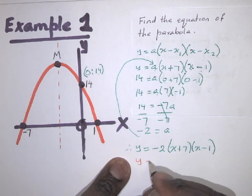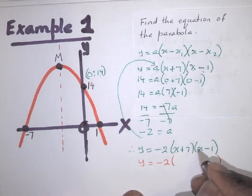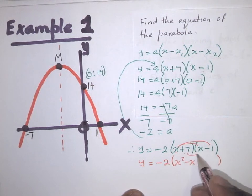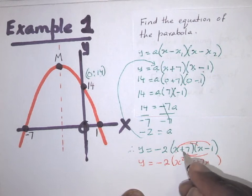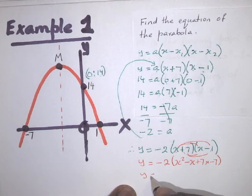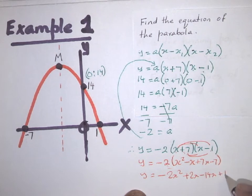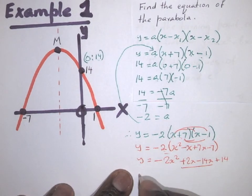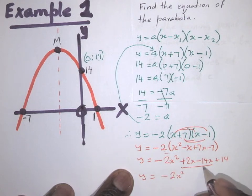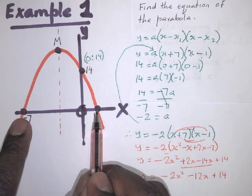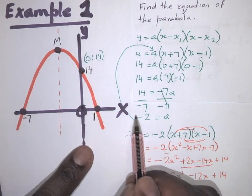If they ask you to remove brackets: y = −2 × (x + 7)(x − 1). Expanding (x + 7)(x − 1): x × x = x², x × (−1) = −x, 7 × x = 7x, 7 × (−1) = −7. So inside we get x² + 6x − 7. Multiplying by −2 gives y = −2x² − 12x + 14.